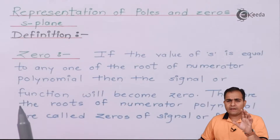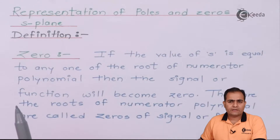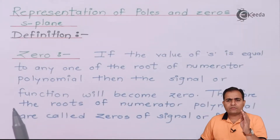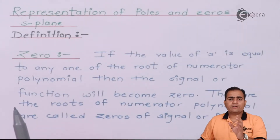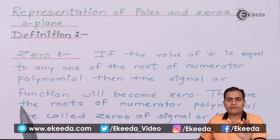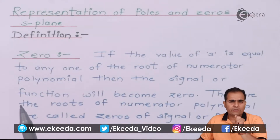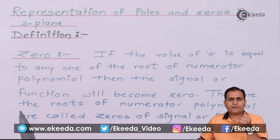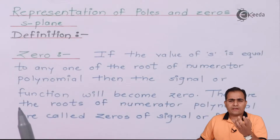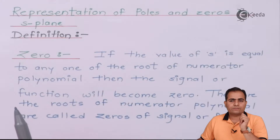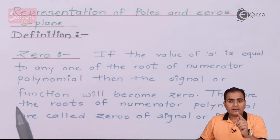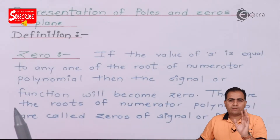If you have any function represented in equation format, try to find out the roots of that equation. Whenever you find the roots, you get some polynomial values. For example, if your equation is s² + 5s + 6, then its roots will be (s + 3) and (s + 2), where 3 and 2 are the polynomial values.